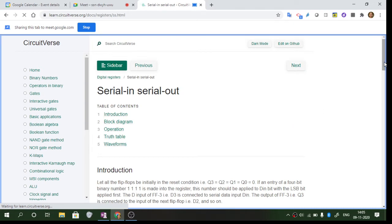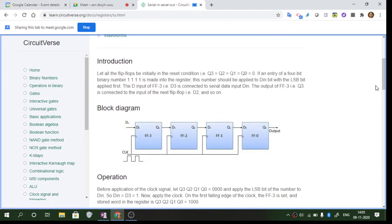What is this serial in serial out? Basically, this diagram here shows four flip-flops being cascaded, so it becomes a four-bit register. If an entry of a four-bit binary number is represented as 1-1-1-1 and this is entered into the register, the number should be applied to the D input with LSB applied first. The D input of FF3, that is D3, is connected to serial input data.